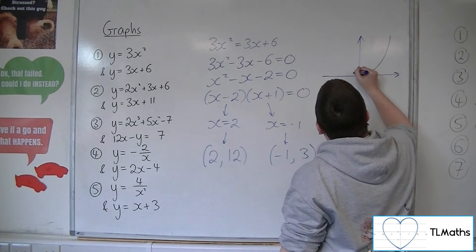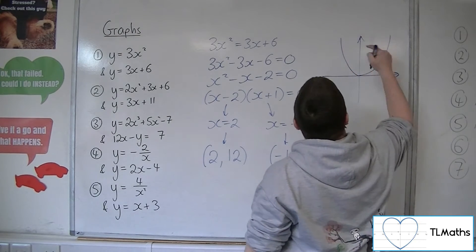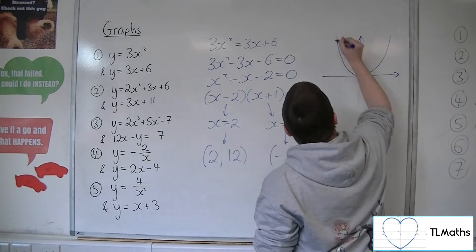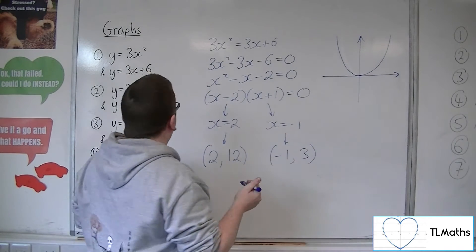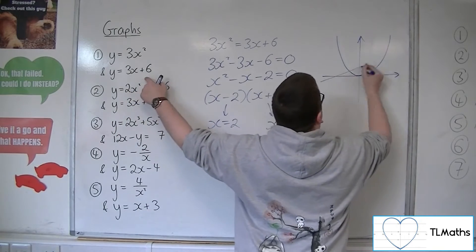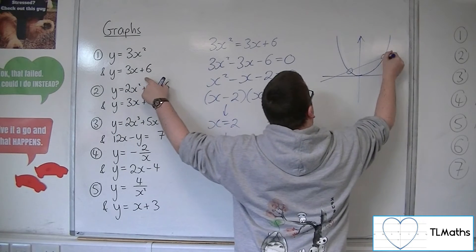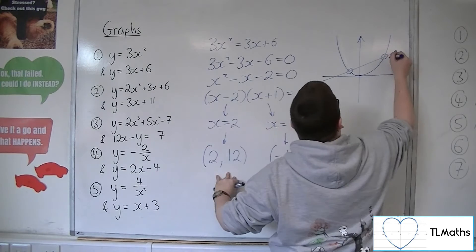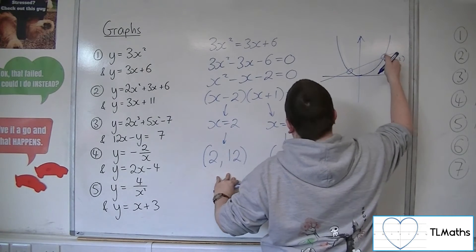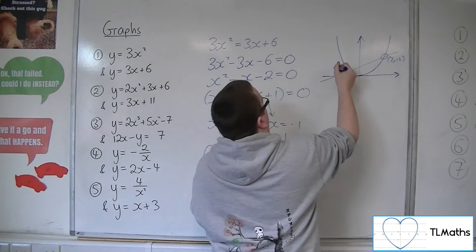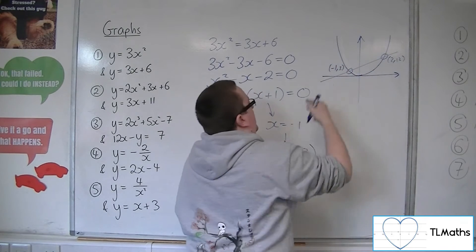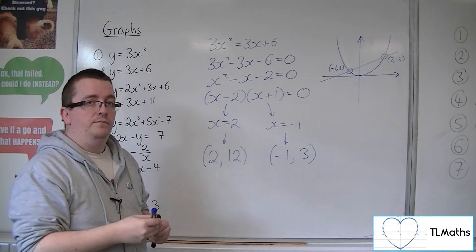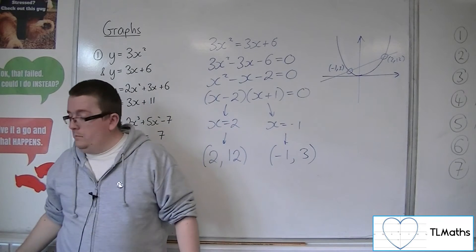Visually, we have a parabola meeting 3x plus 6 — a straight-line graph. So we've got the coordinate (2, 12) and the coordinate (minus 1, 3). That's visually what's going on, and that's number 1.